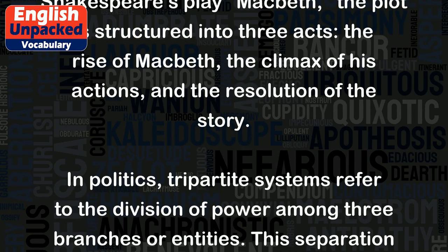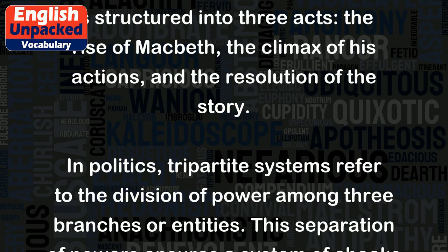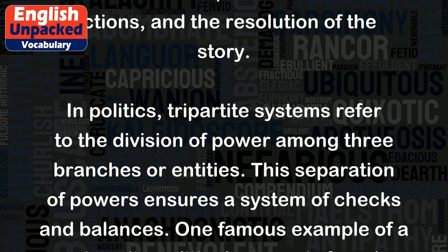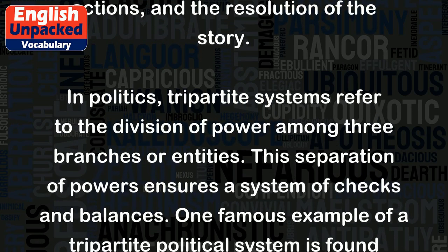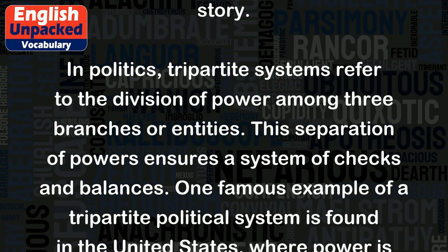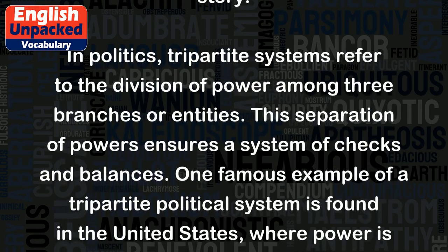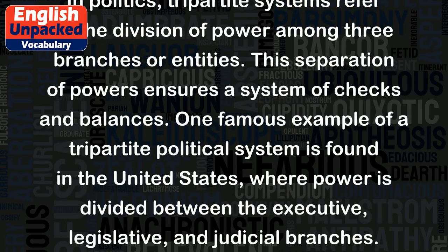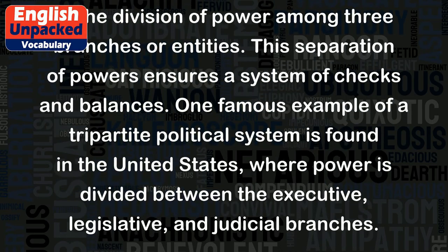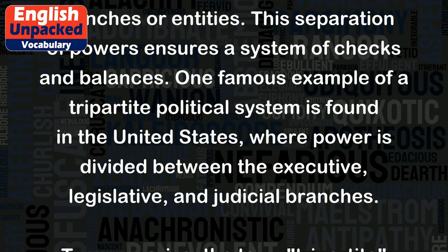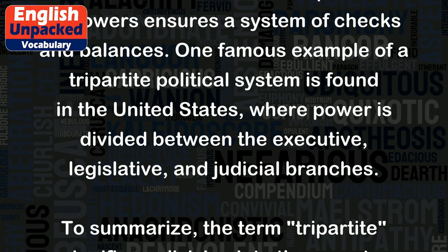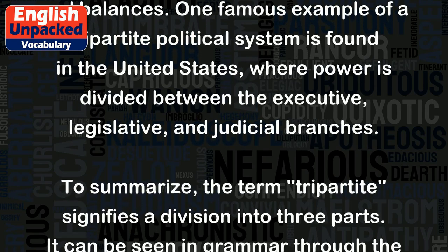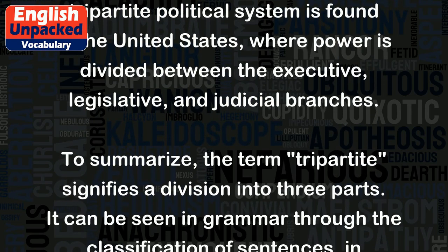In politics, tripartite systems refer to the division of power among three branches or entities. This separation of powers ensures a system of checks and balances. One famous example of a tripartite political system is found in the United States, where power is divided between the executive, legislative, and judicial branches.